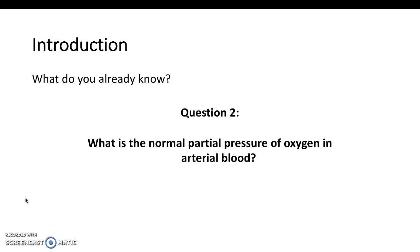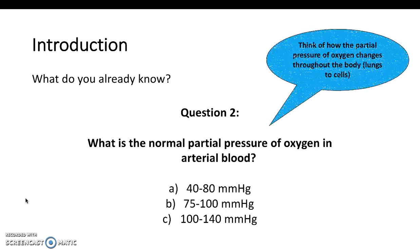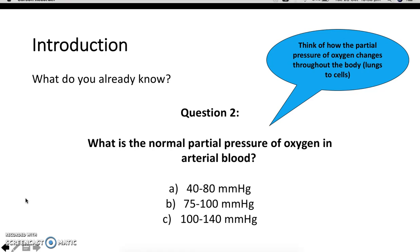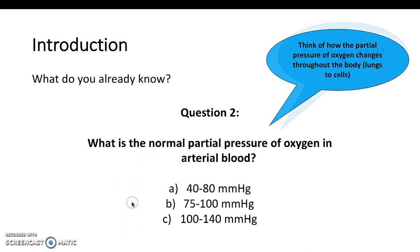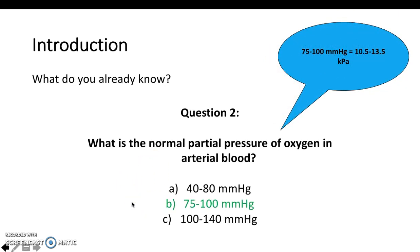Next question: what is the normal partial pressure of oxygen in arterial blood? This is quite tricky and something you need to learn, but it's good to understand how the partial pressure of oxygen changes throughout the body — from the atmospheric oxygen you breathe in to what the partial pressure would be once it leaves the tissues. The answer is 75 to 100.